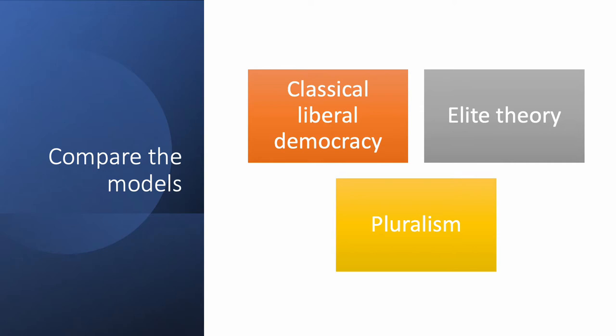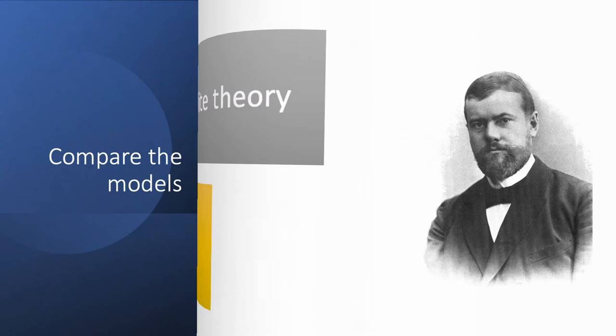As we go through this, keep in mind that we're going to be looking at three different ways of understanding the nature of our political and governmental system. One of these models is classical liberal democracy. Then we'll talk about something called elite theory, and then pluralism. Those are the three main alternatives.